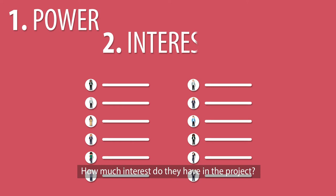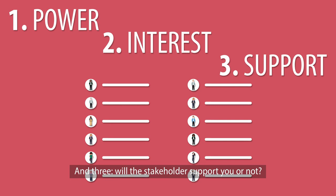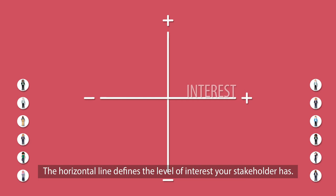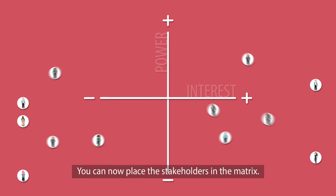will the stakeholders support you or not? Now you make an influence-interest matrix by drawing two lines. The horizontal line defines the level of interest your stakeholder has. The vertical line defines the level of power of your stakeholder. You can now place the stakeholders in the matrix.